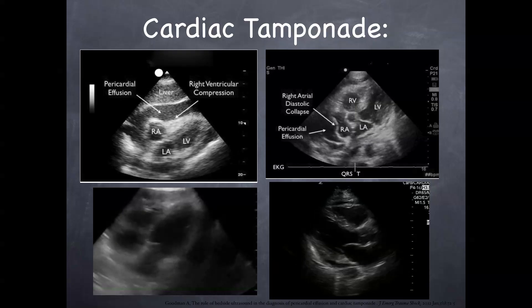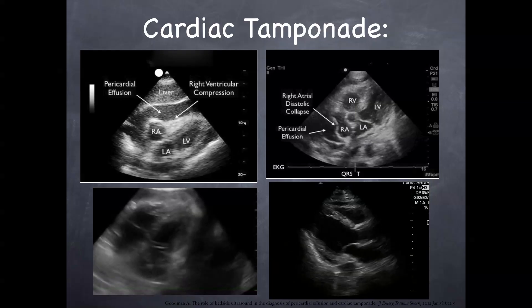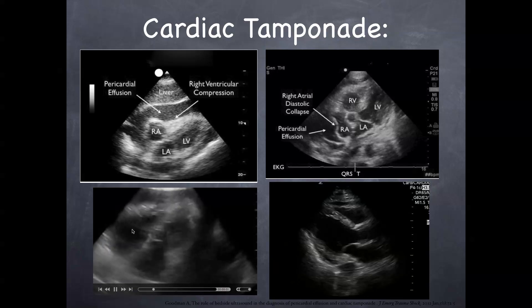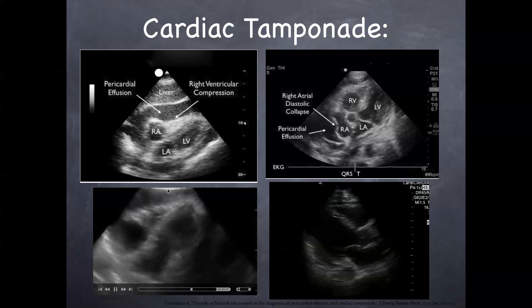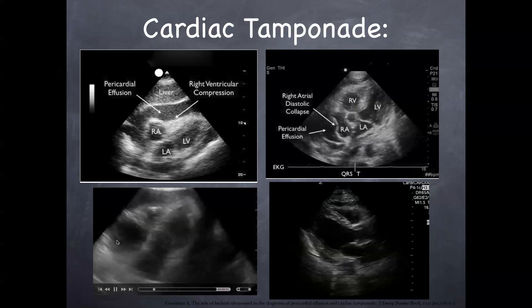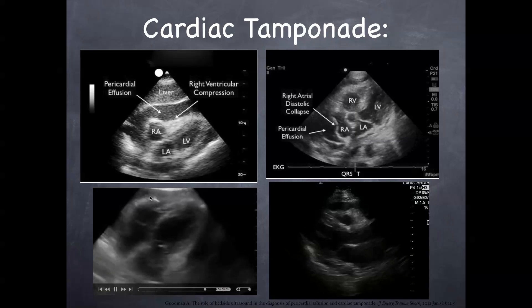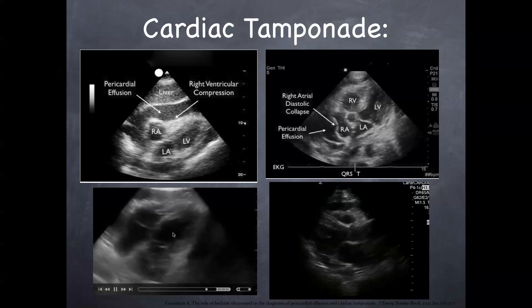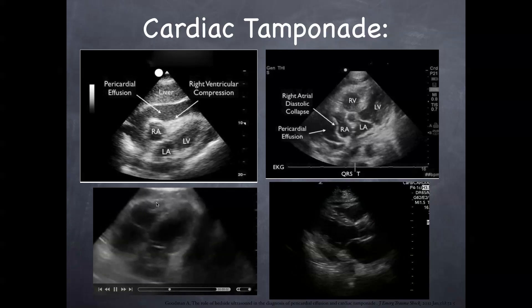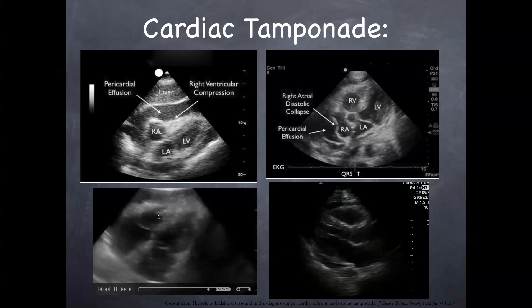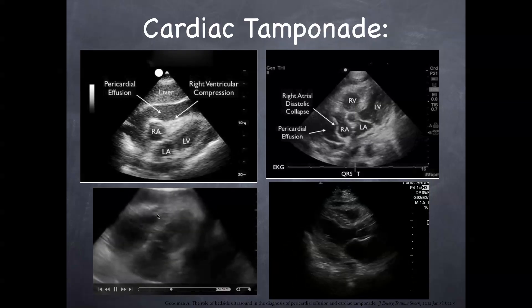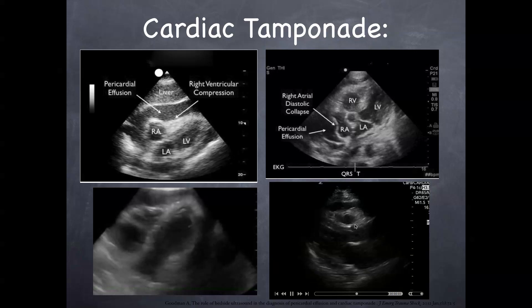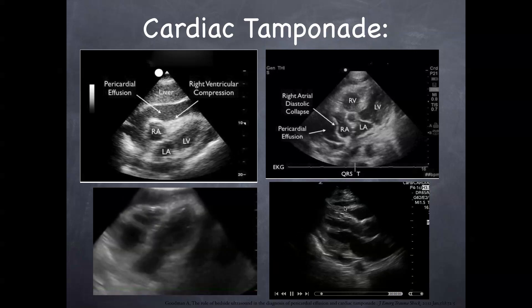When we assess for tamponade on ultrasound, you can look at the right atrium, which tends to be the first thing to show scalloping. The pressure from the outside of the heart from the fluid causes clinical tamponade, pushing inward on that right atrial wall. More commonly described in textbooks, the right ventricle during diastole shows scalloping motion inward, and the pressure is causing circulatory compromise. You can see this is having a significant effect on the right ventricle in the long axis and apical four-chamber views.